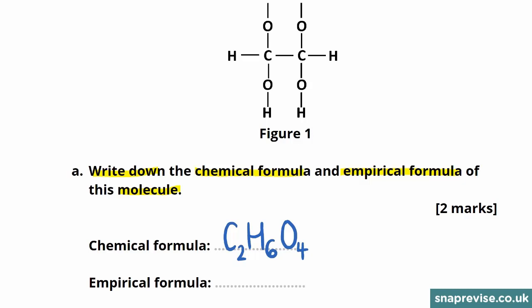The highest common factor of 2, 6 and 4 is going to be 2. Therefore, the empirical formula will result by dividing the entire chemical formula by 2. If we do this, we can see that we get C with just a 1, so we don't need a subscript, H with a subscript 3 and O with a subscript 2.